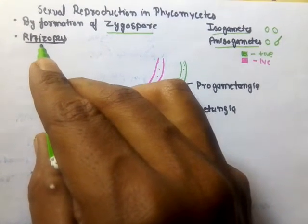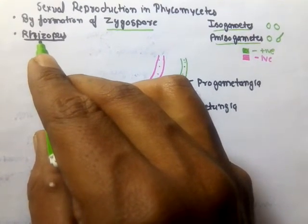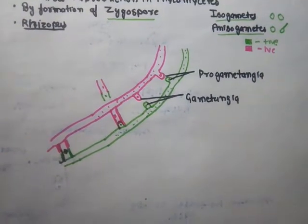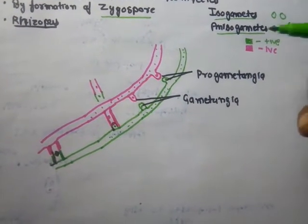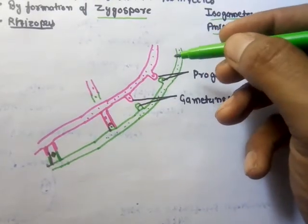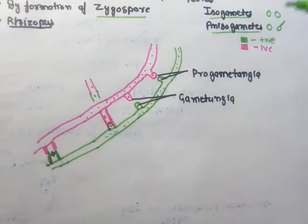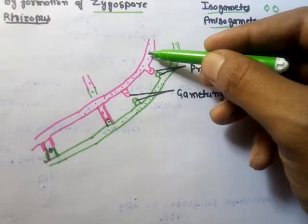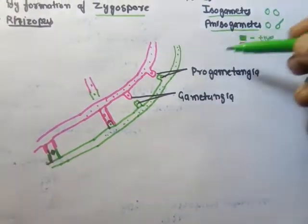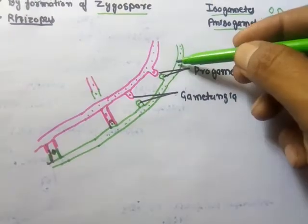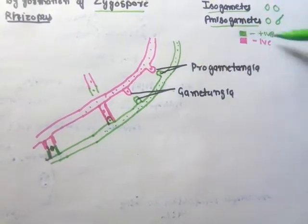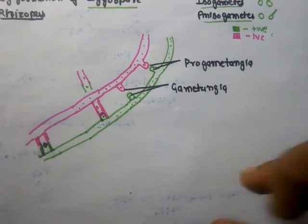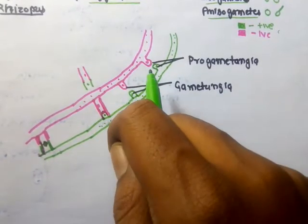In Rhizopus, sexual reproduction takes place by conjugation between two hyphae, which is why the subclass Zygomycetes is also known as conjugation fungi. Conjugation takes place between hyphae of different strains: one hypha belongs to the negative strain, equivalent to the female strain, and one belongs to the positive strain, equivalent to the male strain.